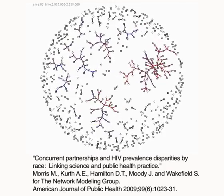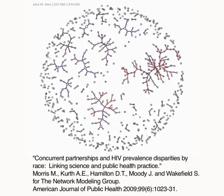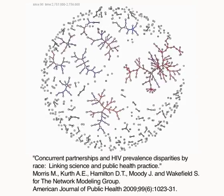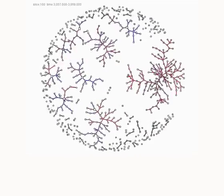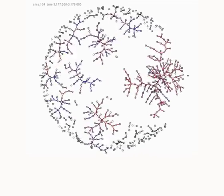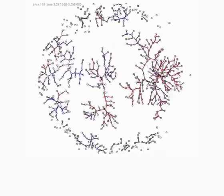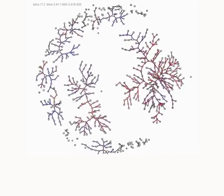In the AddHealth survey, the reported rates of concurrency differ slightly by race: 9% for non-Hispanic Blacks compared to 4% for non-Hispanic Whites. Our simulation suggests that this small difference nearly triples the racial disparity in epidemic potential.